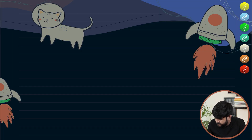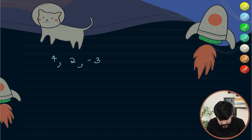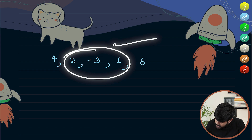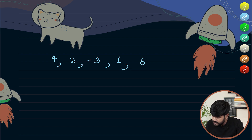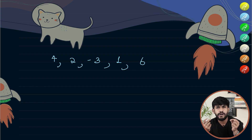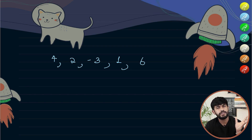We need to find a subarray with zero sum. For example, if we have [4, 2, -3, 1, 6], observe that adding 2, -3, and 1 gives zero. The brute force approach takes each subarray and checks if any of them sum to zero.